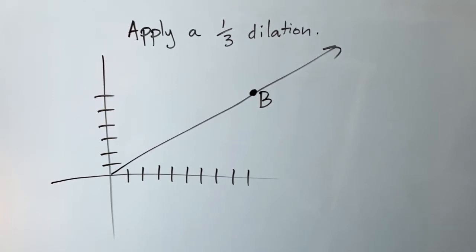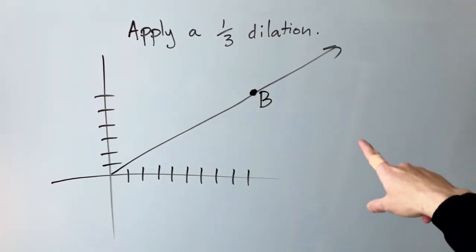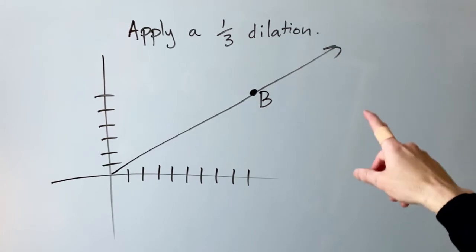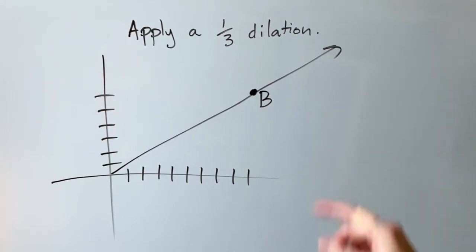So let's say that I wanted to apply a one-third dilation to point B. Now the first thing that you need are the coordinates for point B.